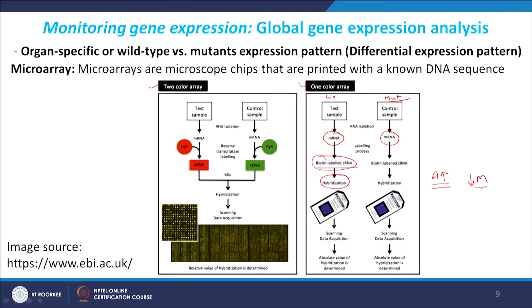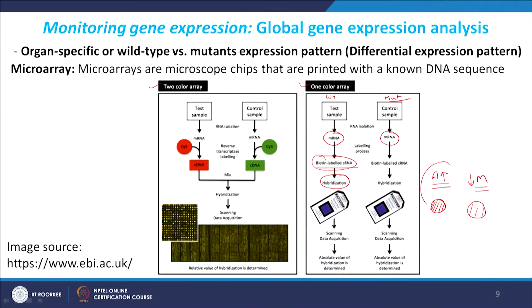Then this labeled cRNA is used for hybridization on the chips, which contain all global genes represented in equal amounts. If gene A is more expressed in the wild type but down-regulated in the mutant, you expect more cRNA in wild type and less cRNA in mutant. When hybridized on the chip, you expect more signal for that probe in wild type and less signal in mutant. By comparing signal intensity — doing data acquisition, scanning, and calculating absolute hybridization values — you can identify the difference in expression of gene A between wild type and mutant.